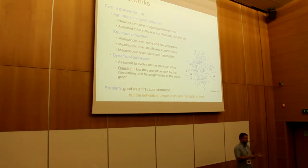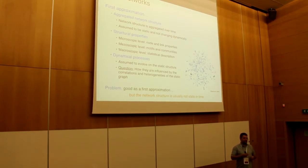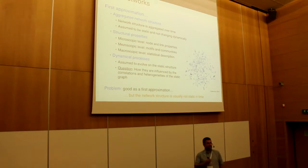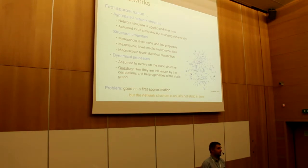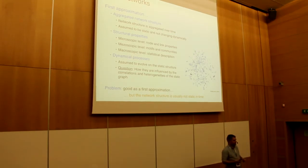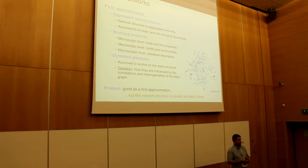So we have a static structure, and we have an SI, SIR, or SIS process evolving on top. The main question is how different structural heterogeneities characterizing the network are influencing the dynamical process. As Bruno explained, the degree distribution is a very important feature — if the degree exponent of a complex network is between two and three, the critical threshold for the spreading process goes to zero. The larger the degree heterogeneities, the smaller the threshold. It's a catastrophic message — it's really difficult to control epidemic spreading on scale-free networks.